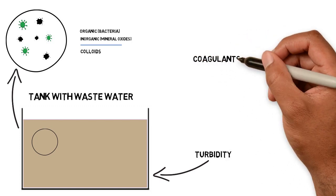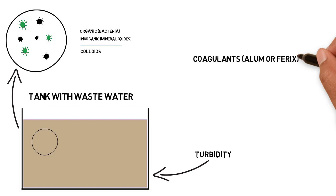By adding coagulants such as alum or ferrox, you will see that the brownish turns into clear waste water and that the sludge accumulates at the tank bottom.